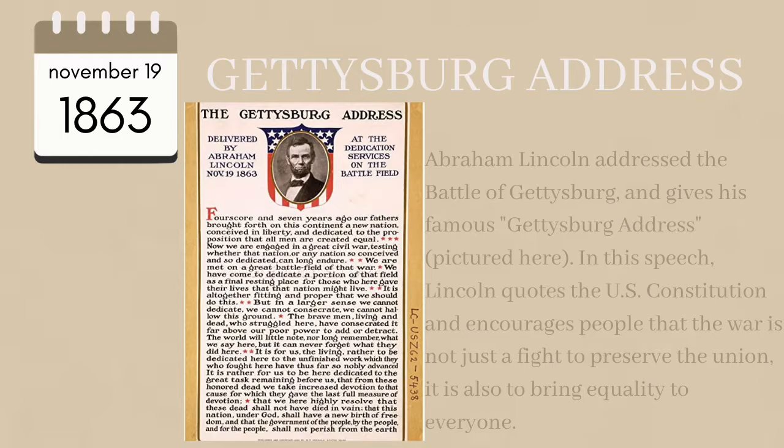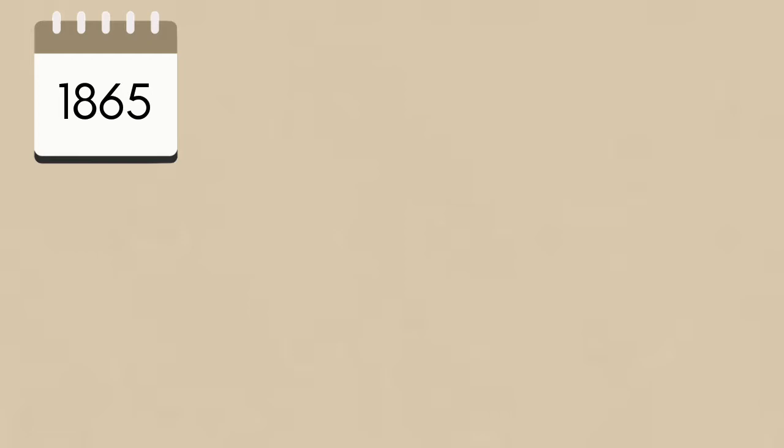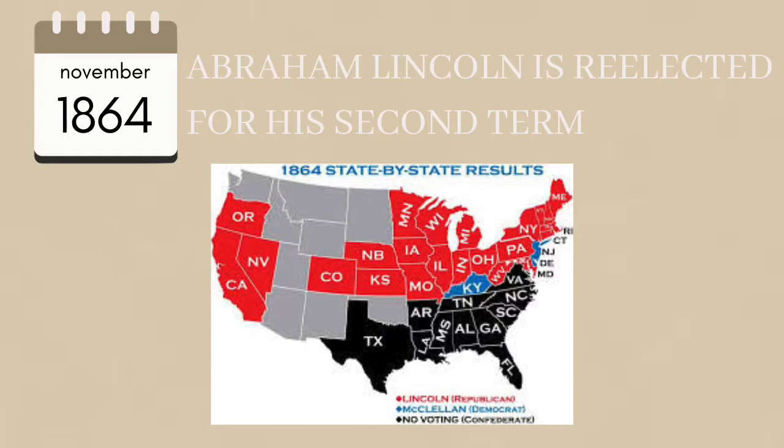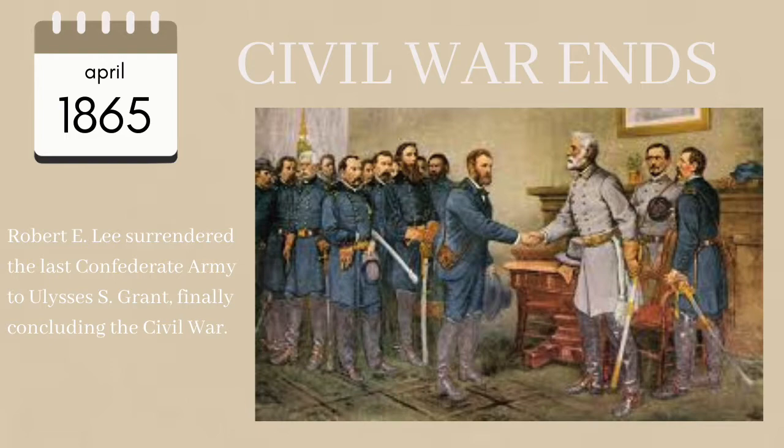Finally, we get to the year 1865. Abraham Lincoln was re-elected for his second term in November of 1864, and his second term began on March 4th, 1865. After a long struggle, the Civil War finally concluded in the spring of 1865. Robert E. Lee surrendered the last Confederate army to Ulysses S. Grant at the Battle of Appomattox Courthouse, named after the location of the surrender.